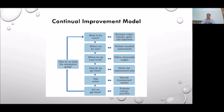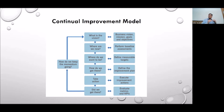When improving services, it is useful to keep a specific framework in mind called the continual improvement model. It has several stages: first, look at your vision; then assess where you are now on the service you want to improve; then determine where you want to be. For example, if your customer satisfaction rating is currently 3.5 out of 5 and your target is 4.5, you know your current state and desired target.